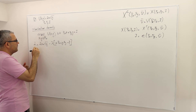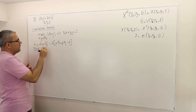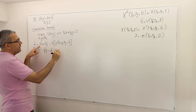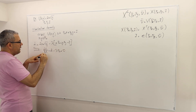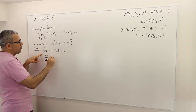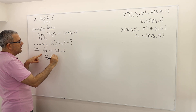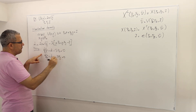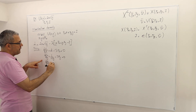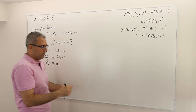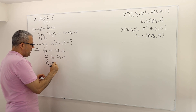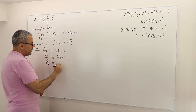The first order conditions are: ∂L/∂X = 2 − λPX = 0; ∂L/∂Y = 1/(2√Y) − λPY = 0; and ∂L/∂λ = PX·X + PY·Y − income = 0.